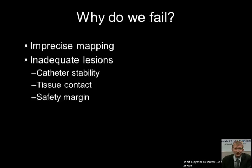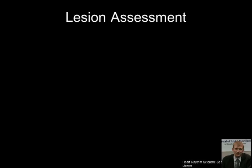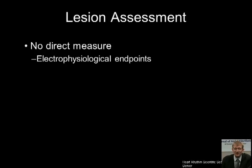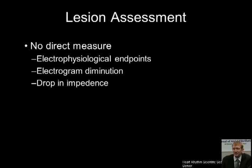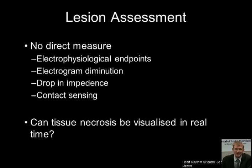All the measures we have are indirect. We have our physiological endpoints, such as isolation of the vein. We can also look at electrogram diminution, which we assume means that the underlying tissue is being destroyed. We can look for a drop in impedance. However, lots of work has shown that you can get a drop in impedance even by turning on the catheter in a bath of saline. We can also look at contact sensing, but all this does is tell us the contact — it does not tell us whether we are forming an adequate lesion.